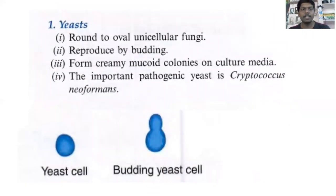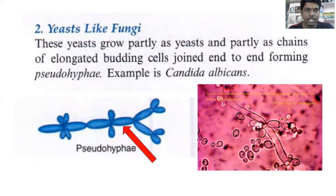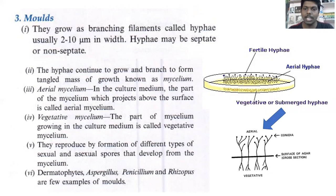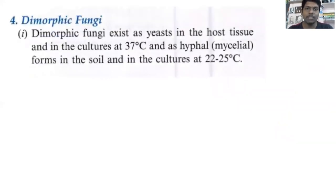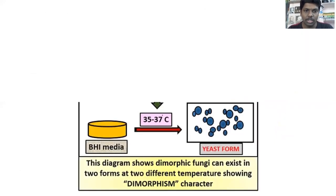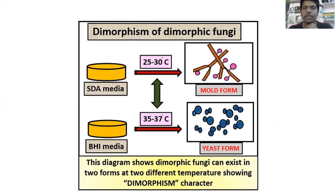Then we have yeast-like fungi, which will form pseudohyphae. We discussed molds, which have two types: aerial mycelium, which grows above the surface of media, and vegetative mycelium, which grows below the surface of media. Then we discussed dimorphic fungi — depending upon the temperature, these fungi show both yeast and mycelial morphology. At body temperature they are in yeast form, and at room temperature they are in mycelial form.